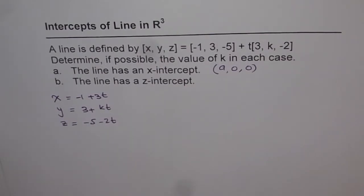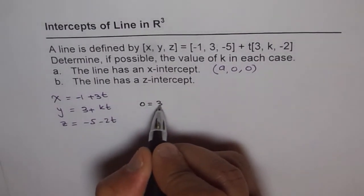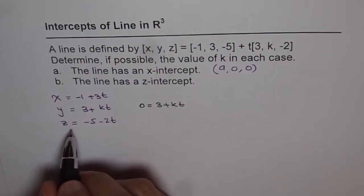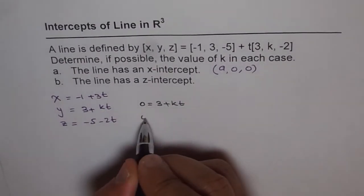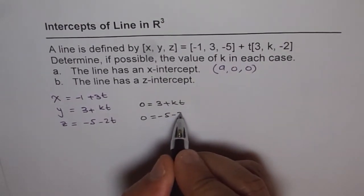So we can put y as 0 and find the value of k. If I put y as 0, what do I get? I get 0 = 3 + kt. And if I put z as 0, what do I get? I get 0 = -5 - 2t.